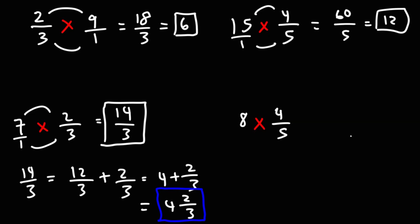Now, what about 8 times 4 fifths? So let's put 8 over 1 and let's multiply across. 8 times 4 is 32. 1 times 5 is 5. So the answer as an improper fraction is 32 over 5.